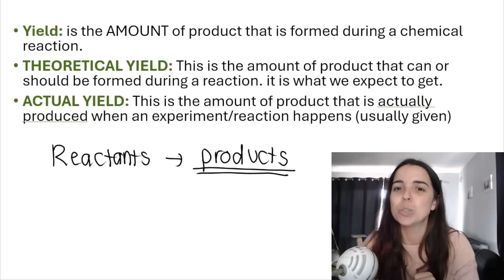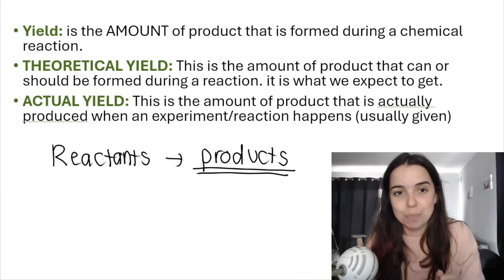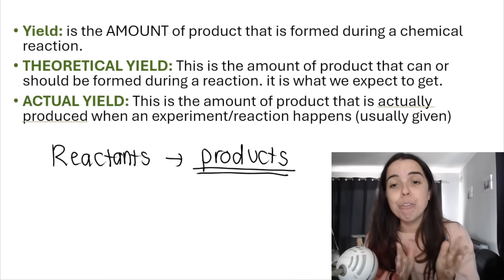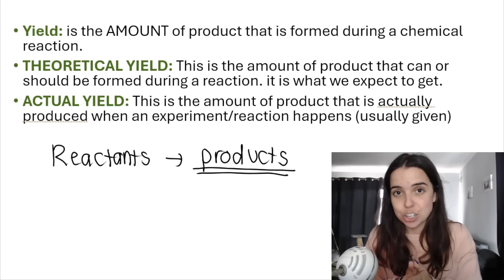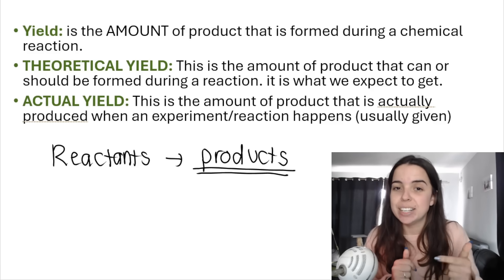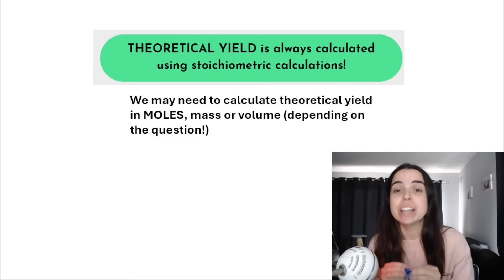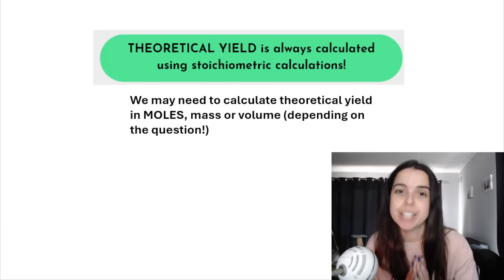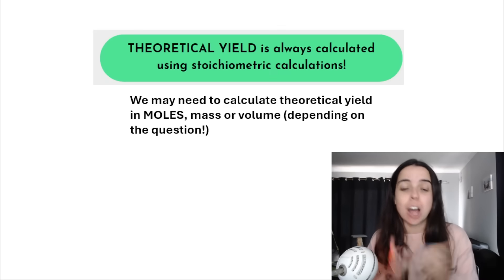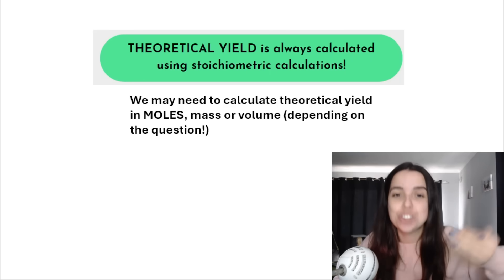The actual yield is what actually happens in a chemical reaction. What we actually get and what we theoretically think we should get often differs in a chemical reaction. Most of the time, we actually produce less than what we theoretically think we will produce. Theoretical yield is always calculated using our stoichiometric calculations, using our mole ratio and calculations to determine how much we should be producing.